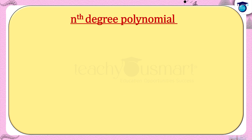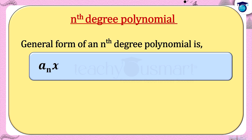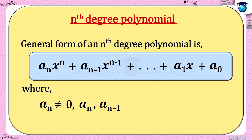Similarly, the general form of an nth degree polynomial is aₙxⁿ + aₙ₋₁xⁿ⁻¹ + … + a₁x + a₀, where aₙ ≠ 0, and aₙ, aₙ₋₁, …, a₁, a₀ are constants.